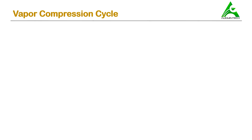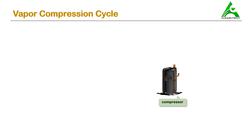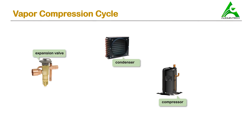Hello everyone, today we will be talking about the vapor compression cycle. In this cycle there are mainly four components: the first one is compressor, then we have condenser, next is expansion valve, and then finally an evaporator.